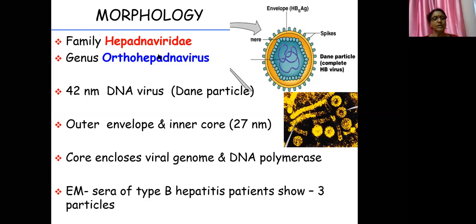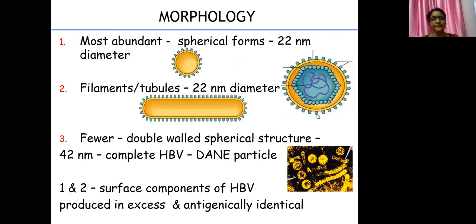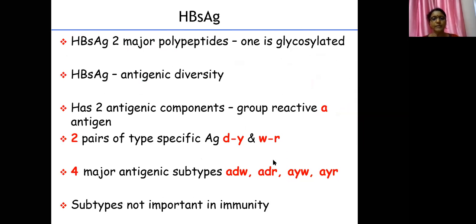Hepatitis B is the only hepatitis virus among the six that is a DNA virus — all others are RNA viruses. It belongs to the family Hepadnaviridae, genus Orthohepadnavirus. The complete virus is 42 nanometers in diameter and is known as the Dane particle. Removing the outer envelope reveals the inner core of 27 nanometers, which encloses the viral genome — the DNA — as well as the viral DNA polymerase. The most abundant particles are the 22 nm spherical ones, followed by tubular particles, with complete viral particles being fewest.